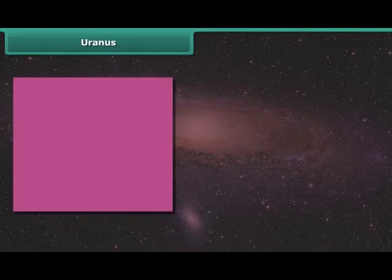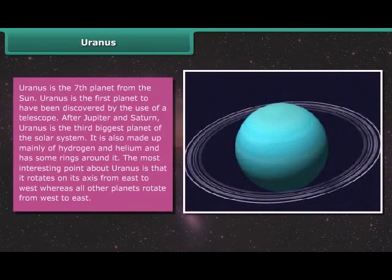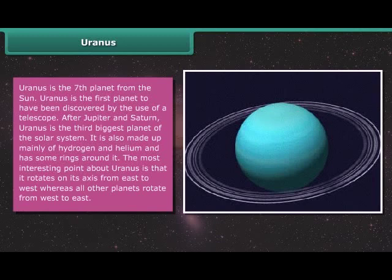Uranus is the seventh planet from the Sun. Uranus is the first planet to have been discovered by the use of a telescope. After Jupiter and Saturn, Uranus is the third biggest planet of the solar system. It is also made up mainly of hydrogen and helium and has some rings around it. The most interesting point about Uranus is that it rotates on its axis from east to west whereas all other planets rotate from west to east.